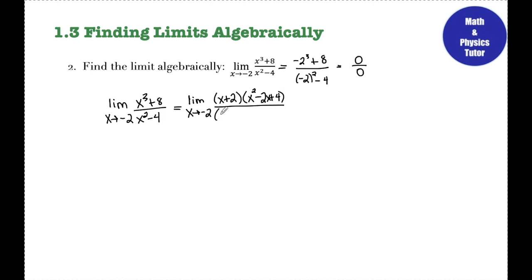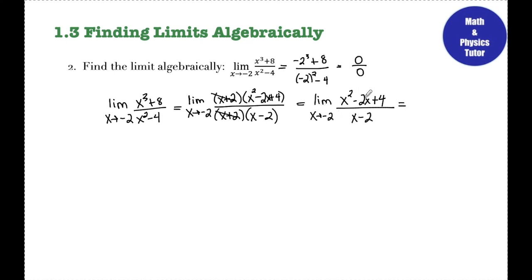The (x + 2) in the numerator cancels with the (x + 2) in the denominator. Now I evaluate the limit as x approaches negative 2 of (x² − 2x + 4) over (x − 2). Plugging in negative 2: the numerator gives (−2)² − 2(−2) + 4 = 4 + 4 + 4 = 12, and the denominator gives −2 − 2 = −4. So 12 over negative 4 gives my answer of negative 3.